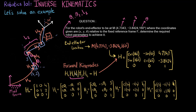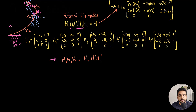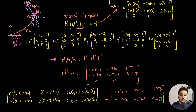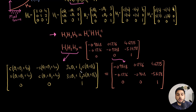To simplify the problem, we take H0 and H4 to the right side of the equation. So we get: H1·H2·H3 = H0_inverse · H · H4_inverse. I have input H0, H, and H4 inverse into MATLAB and gotten the resulting matrix. Now I need to solve for H1·H2·H3. Multiplying H1·H2·H3 gives a matrix on the left, and I know both matrices are equal, so I can compare their terms.